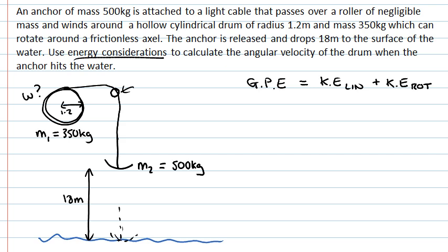So now let's think about what each of these expressions is. Gravitational potential energy is given by mass times gravitational acceleration times height. And here, the mass that we want is the mass of the anchor as that's what's dropping. So that's M2 times g times h.